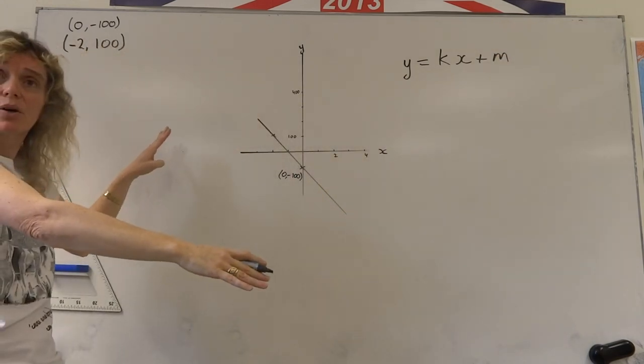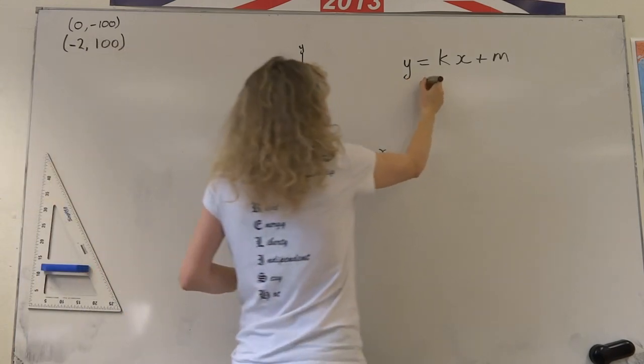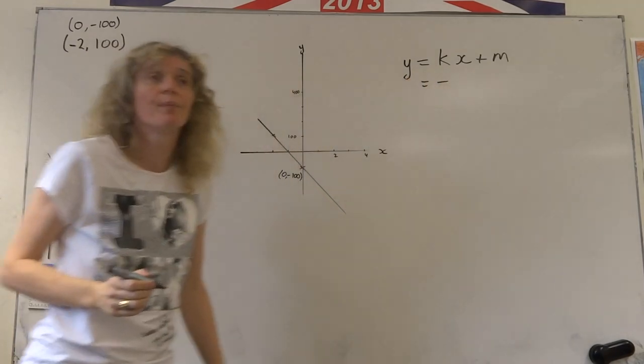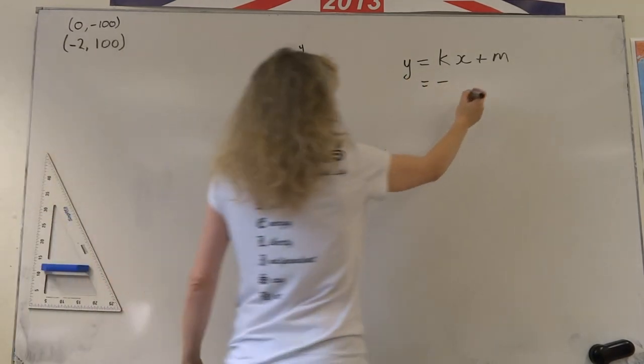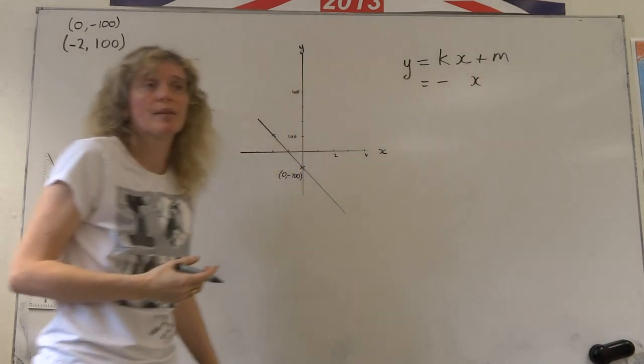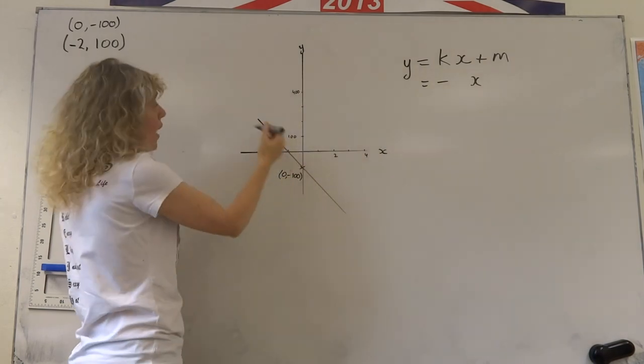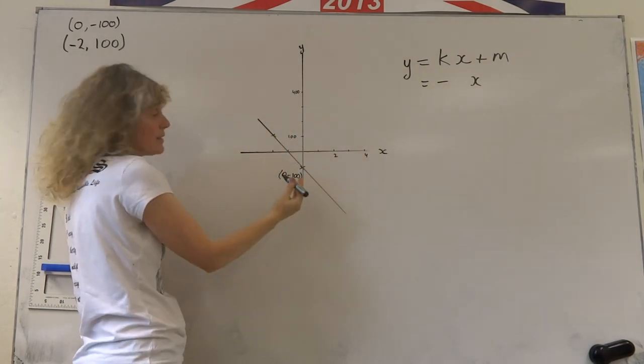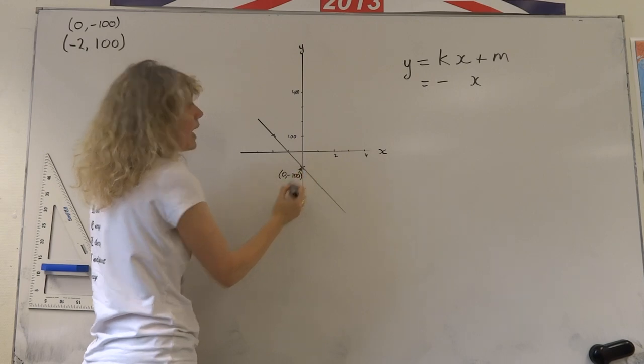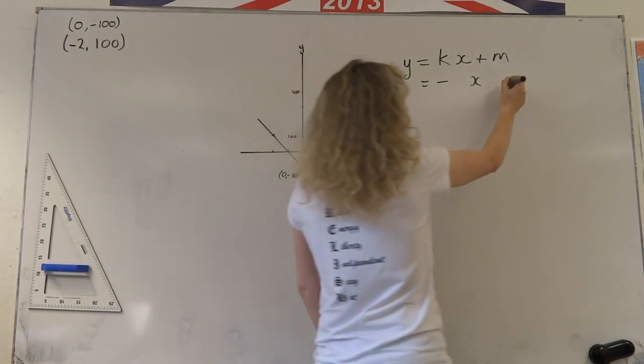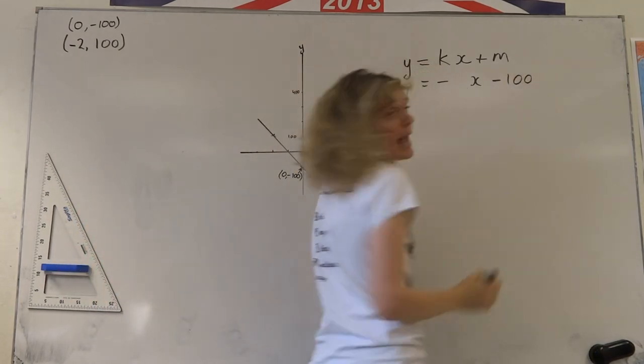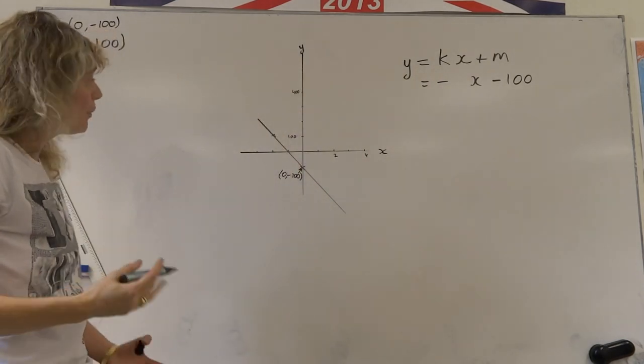We know that it's sloping downwards like this, so we're coming down the mountain. We know that there's going to be a minus sign in front of the x value. We don't know how steep it is yet, but we know there's going to be a minus sign there. And we know the intercept. We just look at where does the line cut the y-axis. It cuts the y-axis at minus 100, so we already know that m equals minus 100.